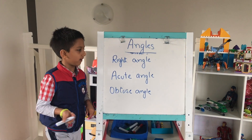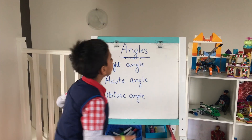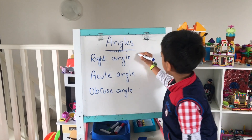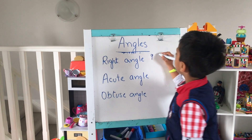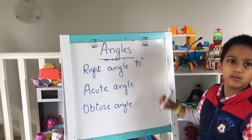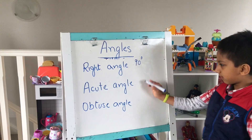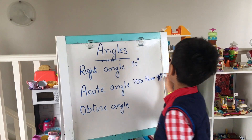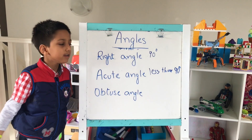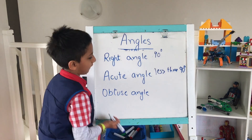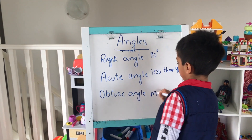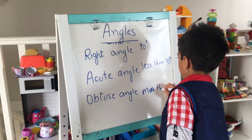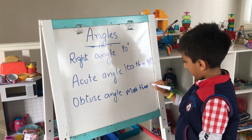Now we will revise the three angles. The first angle is the right angle — 90 degrees. Then it's the acute angle — less than 90 degrees, cute like a baby. And then the obtuse angle — more than 90 degrees.